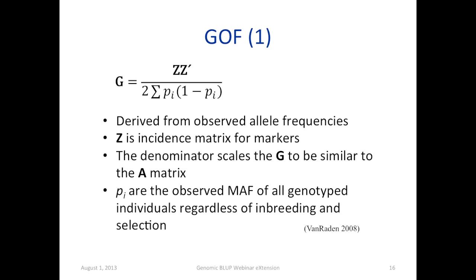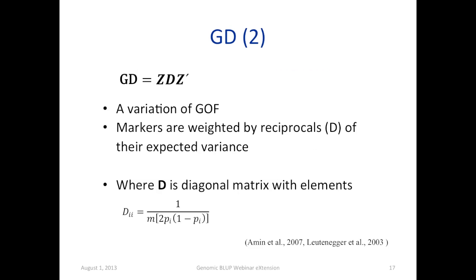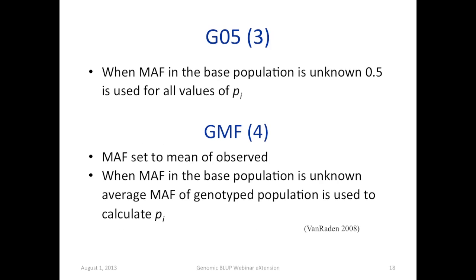So between 1 and 2, the difference is weighting the ZZ prime. And then G05, when minor allele frequency in the base population is unknown, then 0.5 is used for all the values of the P sub i.